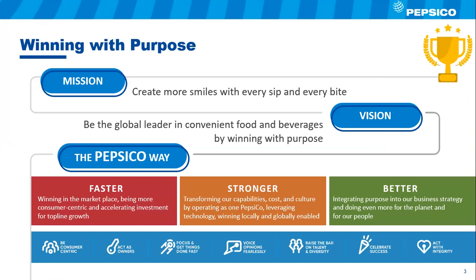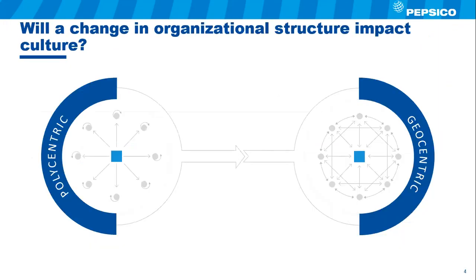The PepsiCo way represents the leadership behaviors expected of all employees to ensure we win with purpose by being faster, stronger, and better as an organization. PepsiCo has undergone an organizational transformation in the last seven years. We've gone from being more siloed — with functions rolling centrally into one location, known as polycentric — to being more matrix, where leaders lead teams of direct reports from multiple countries and adhere to global policies across geographic boundaries, also known as being geocentric.